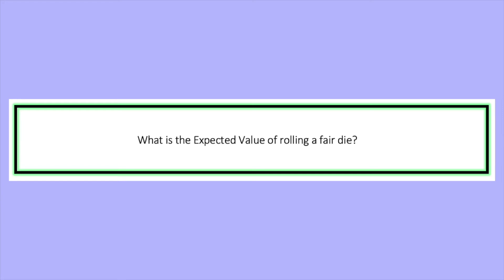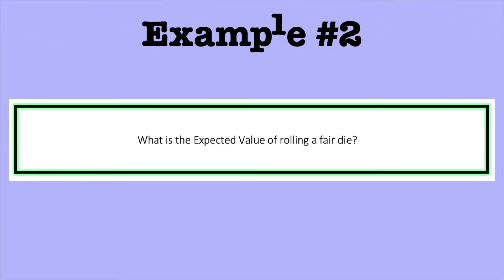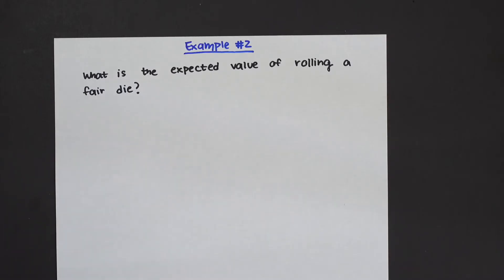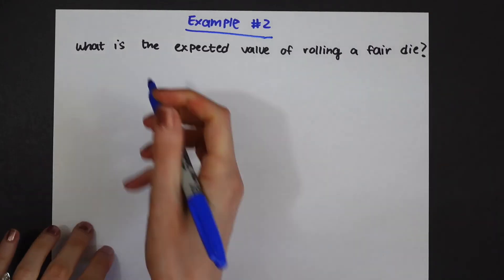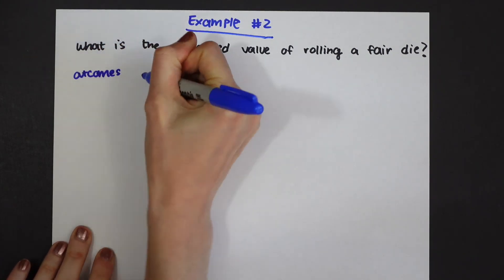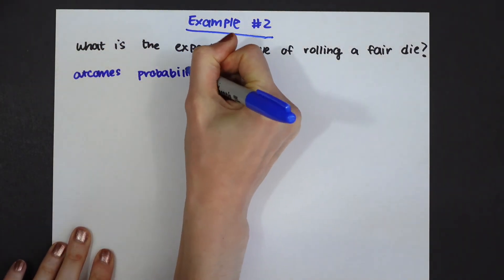So let's now look at example number two. What is the expected value of rolling a fair die? We're gonna want to do the same thing, we're gonna want to list out all the outcomes and the probabilities of getting each outcome.